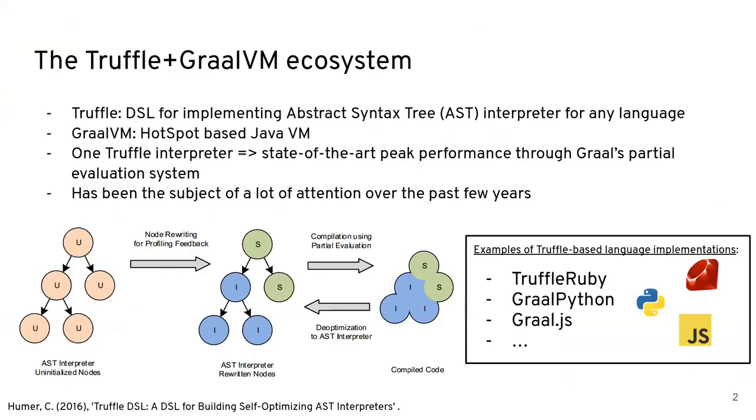First of all, to briefly describe the ecosystem we're working with that many of you are already familiar with, which is Truffle and Graal. Truffle is a DSL that can be used to implement an interpreter in any language through an AST-based syntax tree. And Graal VM is a HotSpot-based Java VM that's made to work alongside Truffle.